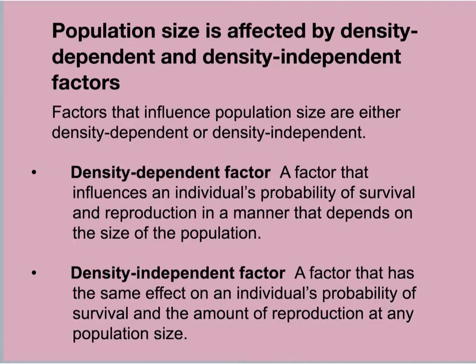In 1932, Russian biologist Gause conducted a set of experiments that demonstrated that food supply could control a population's growth. He monitored a population of two species of Paramecium — little aquatic arrow-shaped organisms that, when cut in half, have regeneration qualities.